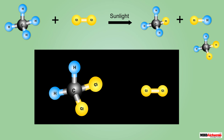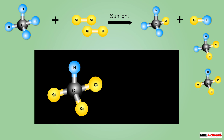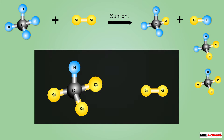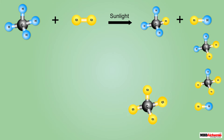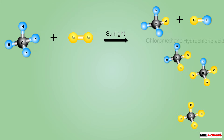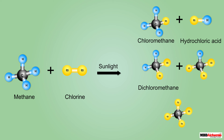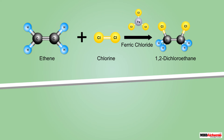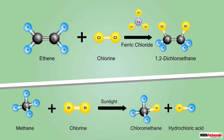If the reaction is carried out with excess of chlorine and continuous exposure to sunlight, the chlorine atoms replace all the hydrogen atoms of methane one by one, giving rise to the products dichloromethane, chloroform, and carbon tetrachloride.